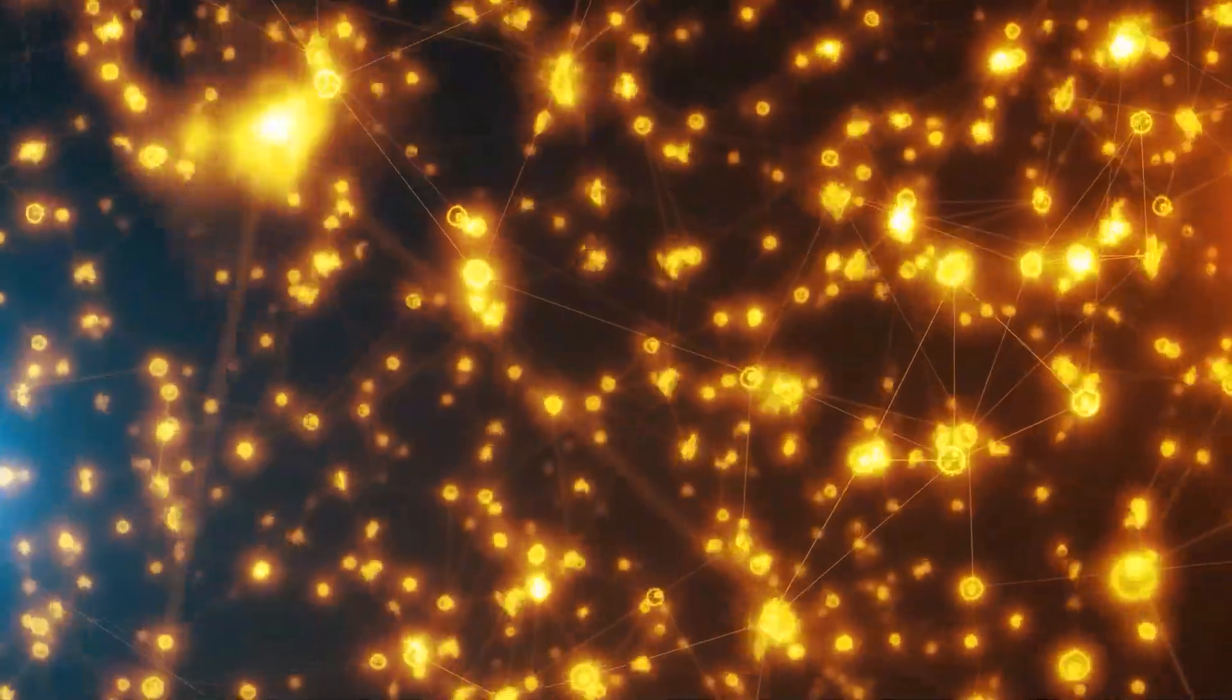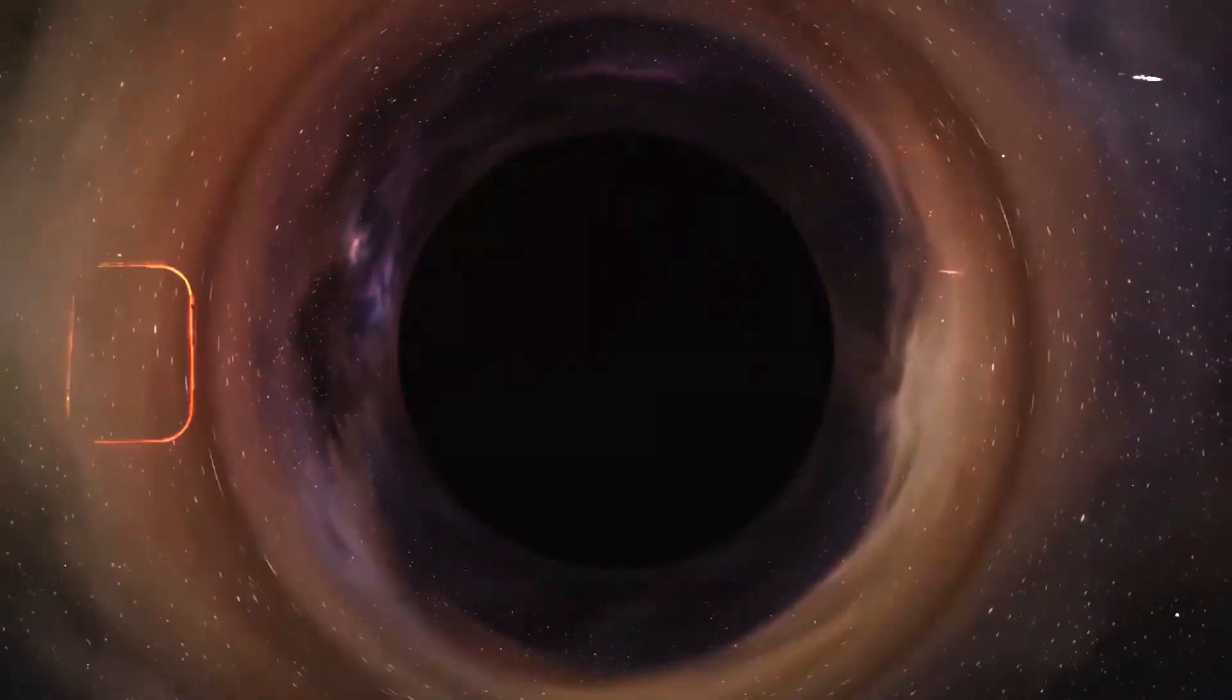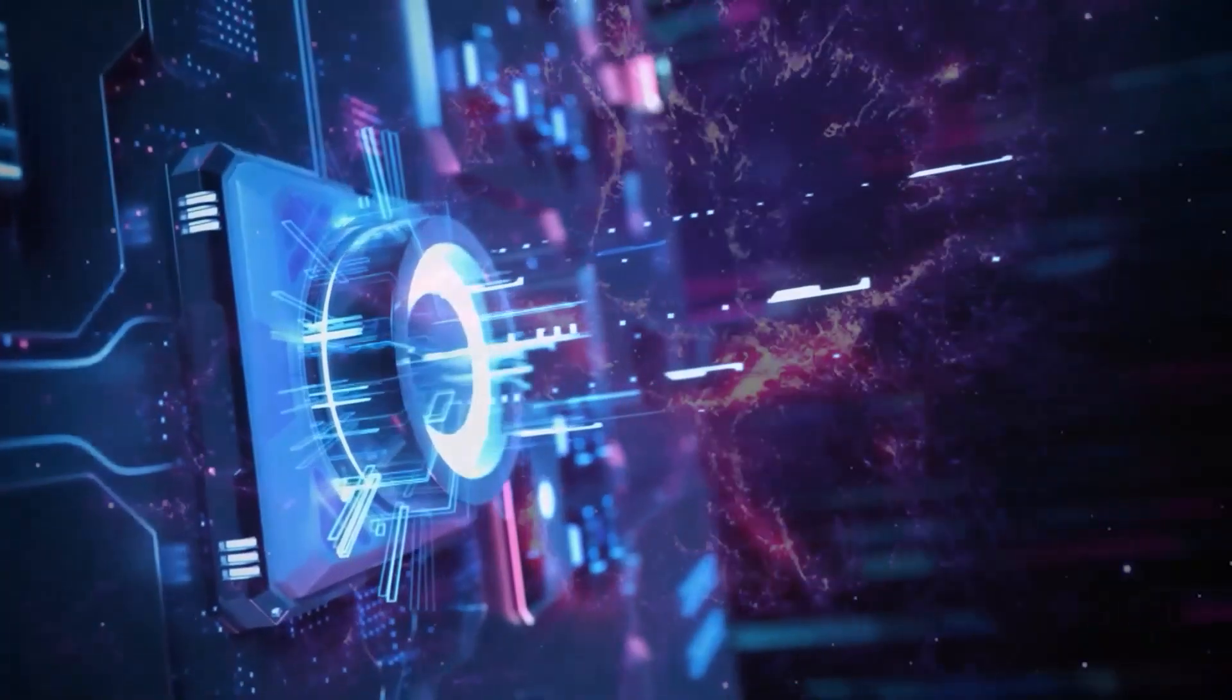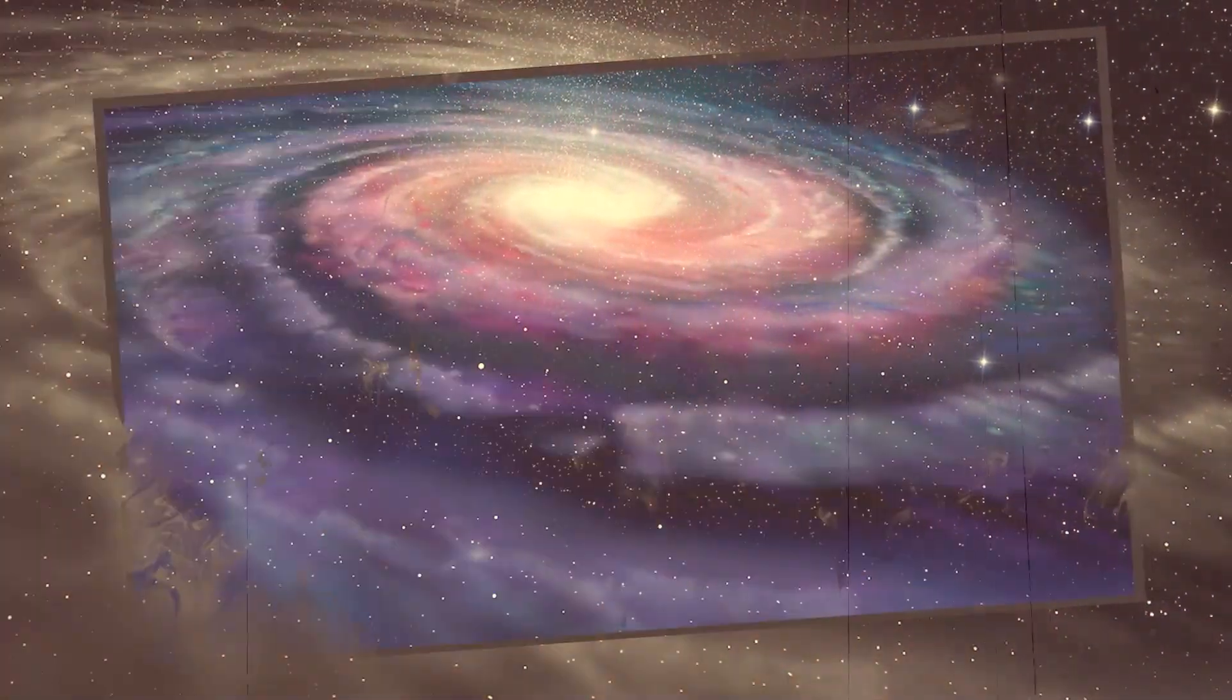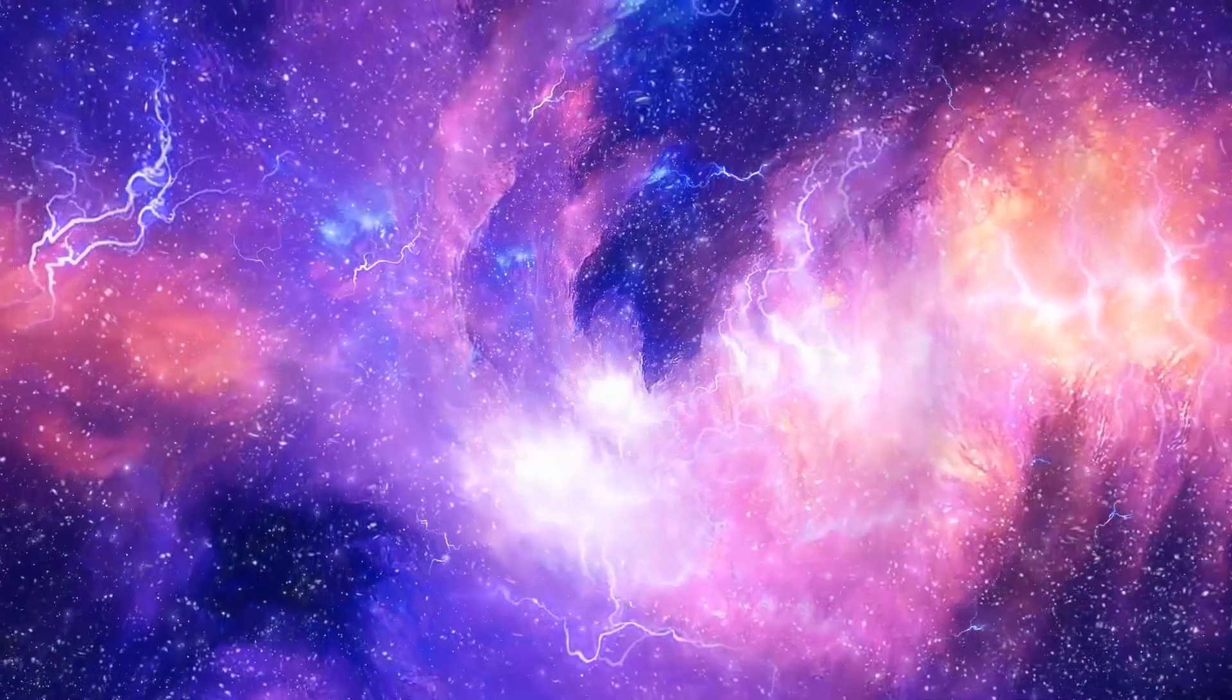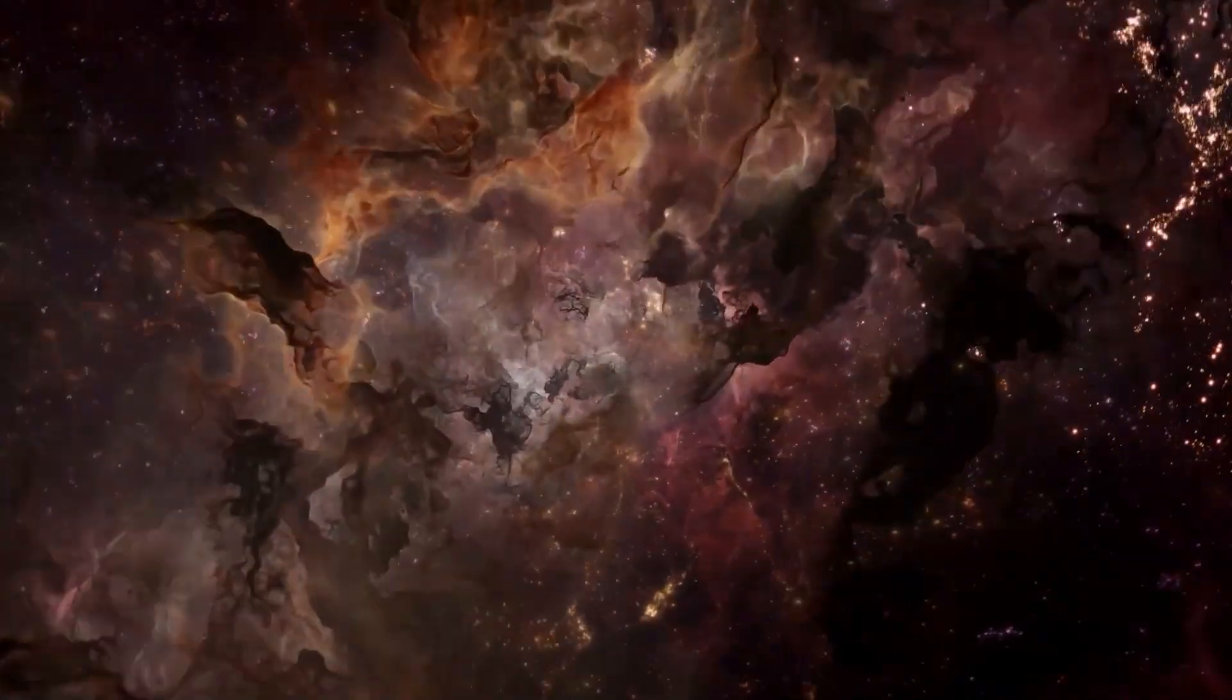This insight spawns thrilling possibilities. Suppose an informational curvature operates beside the four known forces. Where entanglement densifies, space contracts. Where information thins, space relaxes. Galaxies might drift upon seas not only of dark matter, but of intertwined statistics. Cosmic voids could be deserts of correlation, while superclusters are snarls of shared quantum history.